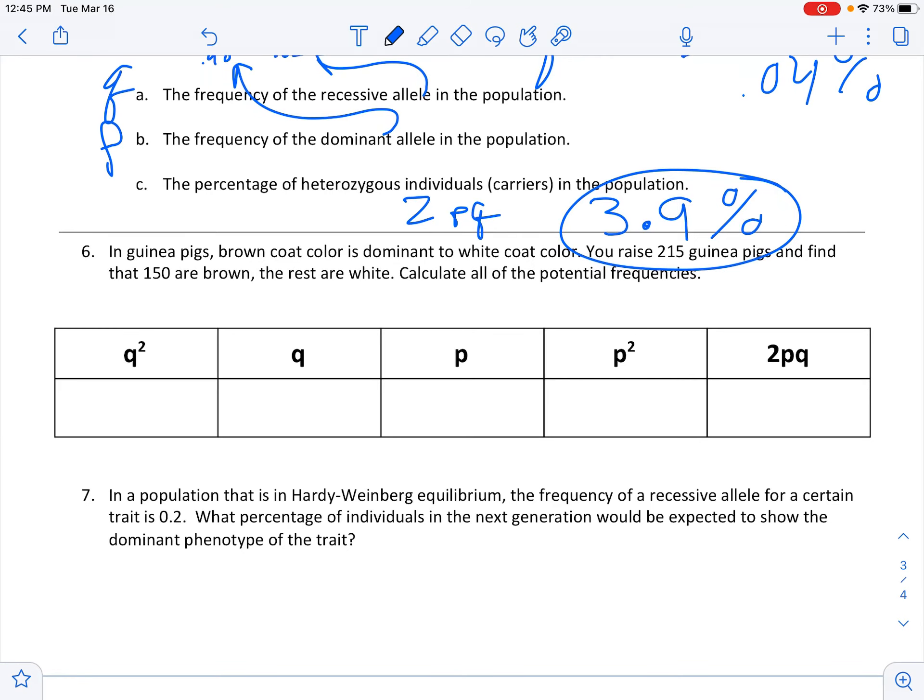Question six. In guinea pigs, brown coat color is dominant to white coat color. You raise 215 guinea pigs and find that 150 are brown, so 150 have the dominant phenotype. The rest are white.